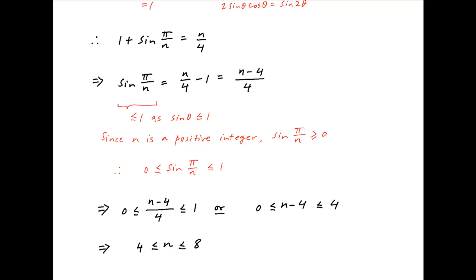Going back to the result sin(π/n) = (n − 4)/4: putting n = 4, the left-hand side is sin(π/4) = 1/√2, and the right-hand side is 0. Since these are not equal, n = 4 does not satisfy the given equation.